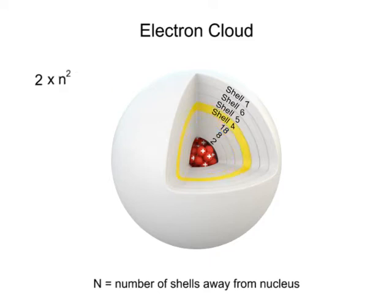And for the fourth shell, it would be 2 times 4 squared, or 2 times 16, yielding 32 electrons, and so on.